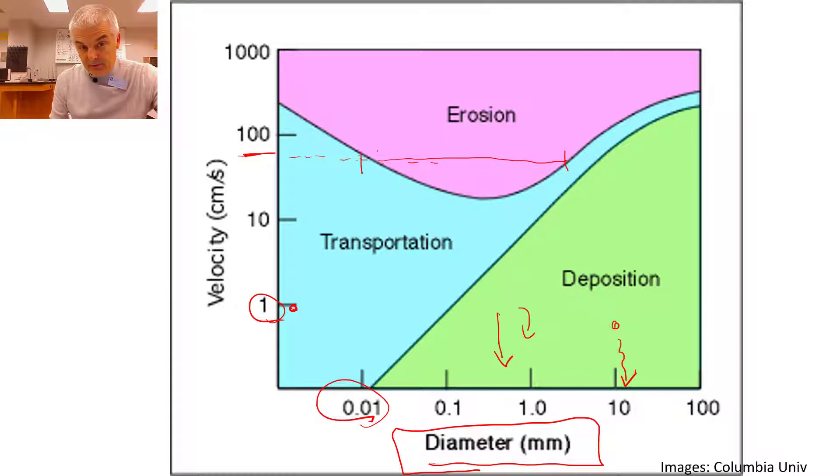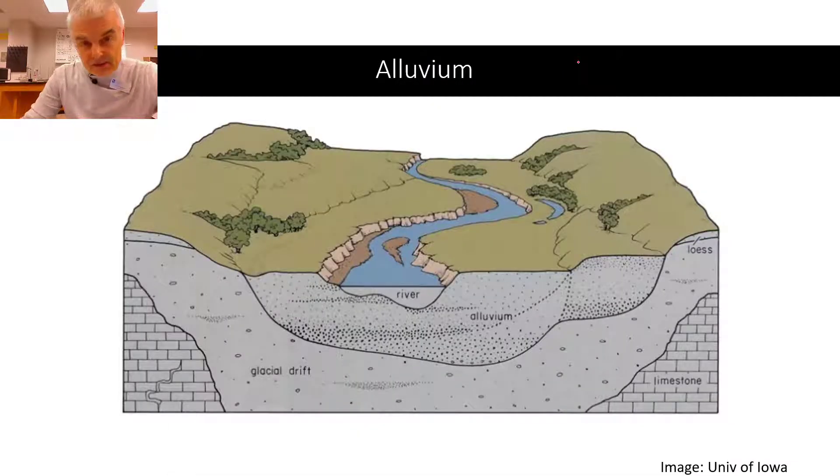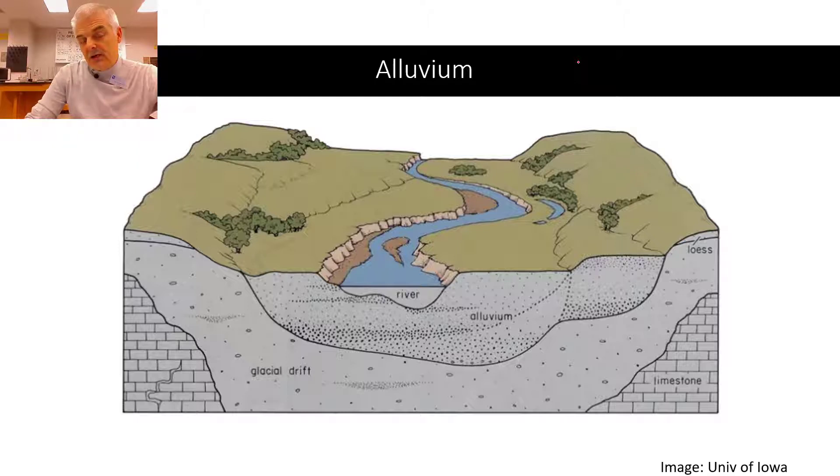And then we get to deposit, they deposited when they are at this speed, when they are a little bit larger. And if you get super duper speedy, all you're going to do is you're going to be eroding. It's not going to cause. So this cool graph helps us understand the concept of competence.